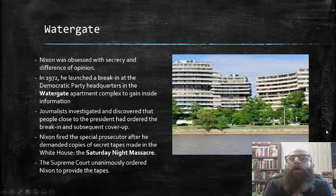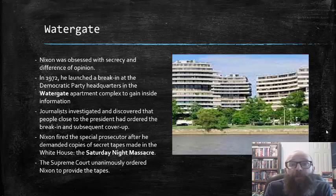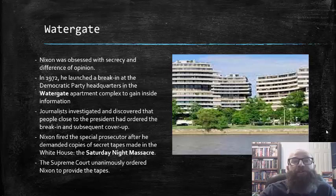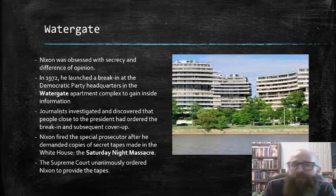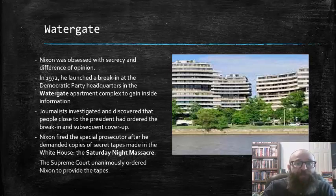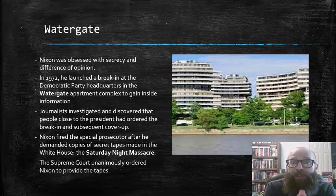Nixon's fatal flaw was that he was obsessed with secrecy and difference of opinion, and this would ultimately prove to be his undoing. During the 1972 election, he actually launched a break-in at the Democratic Party headquarters at the Watergate apartment complex in Washington, D.C., in attempts to gain some inside information he could use against his Democratic opponents. Although this incident did not directly affect the election of 1972, once the election was over, journalists investigated and discovered that people close to the president had ordered the break-in and subsequent cover-up.